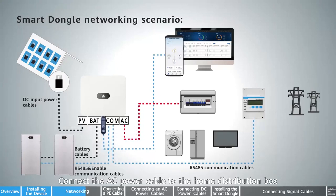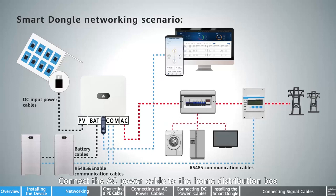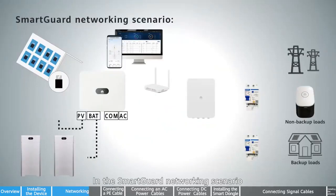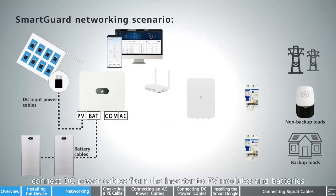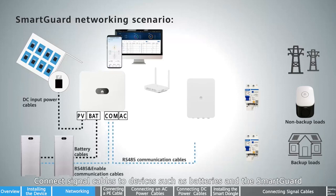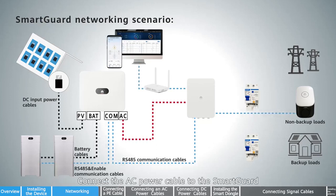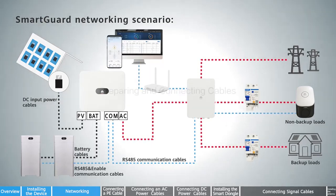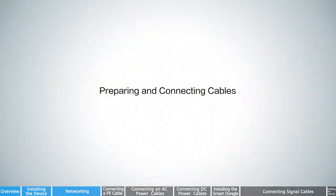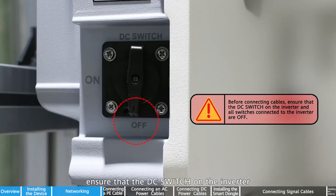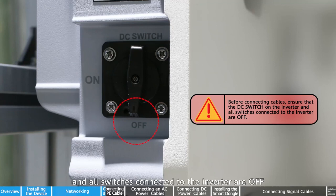Connect the AC power cable to the home distribution box. In the Smart Card networking scenario, connect DC power cables from the inverter to PV modules and batteries. Connect signal cables to devices such as batteries and the Smart Card. Connect the AC power cable to the Smart Card. Before connecting cables, ensure that the DC switch on the inverter and all switches connected to the inverter are off.